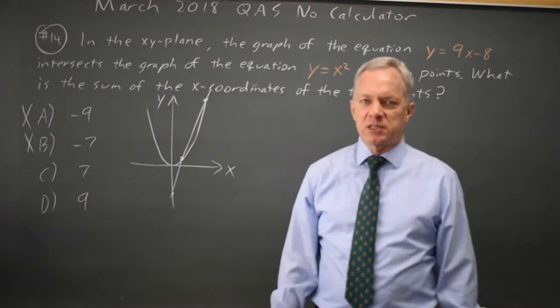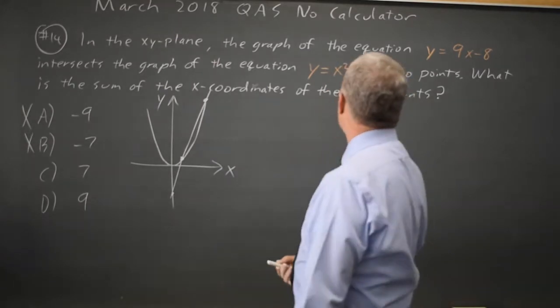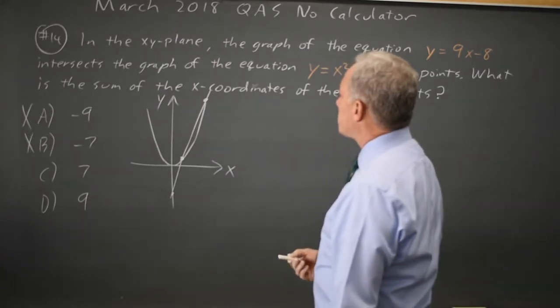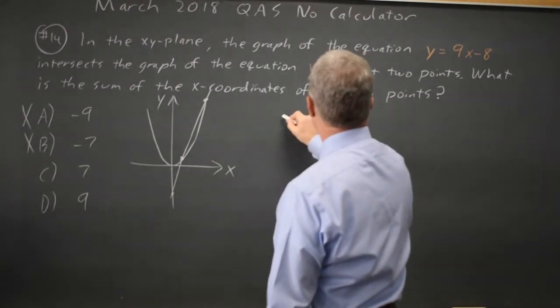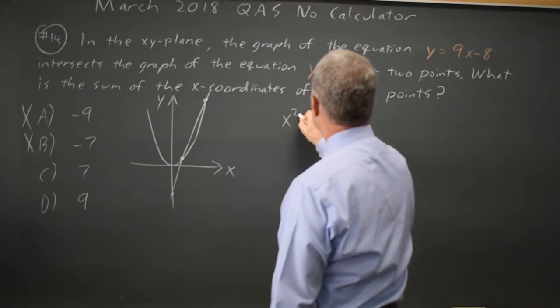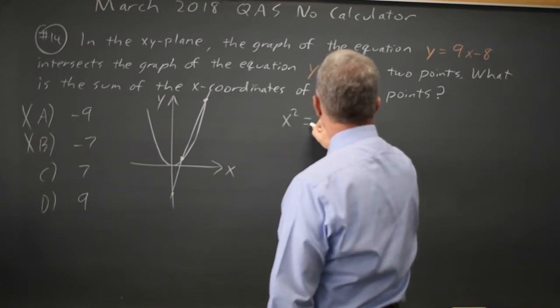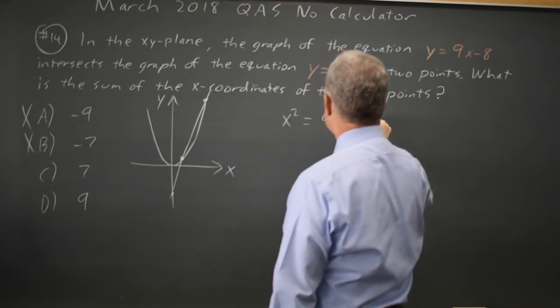Estimation will not tell us whether it's C or D. But the points of intersection are the solutions of the system. So y equals 9x minus 8 and y equals x squared. The y values have to be equal. So x squared equals 9x minus 8.